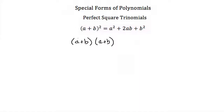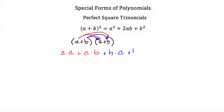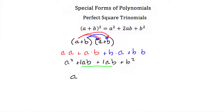When we multiply that out, we multiply a times a and a times b, and then b times a and b times b. So a times a is a squared, a times b is ab, b times a is ab again, and b times b is b squared. Since we have 1ab and 1ab, combining like terms gives us a squared plus 2ab plus b squared, which is exactly what we have.